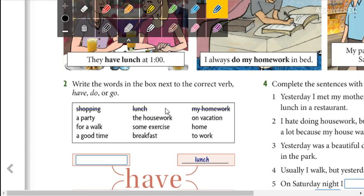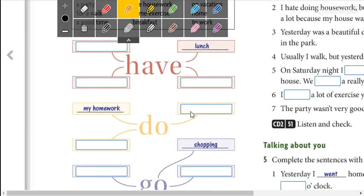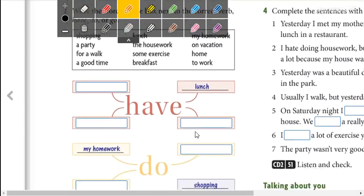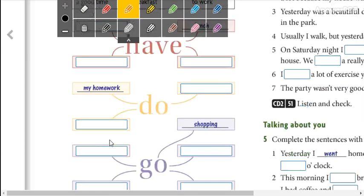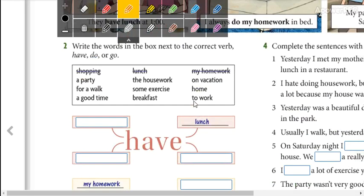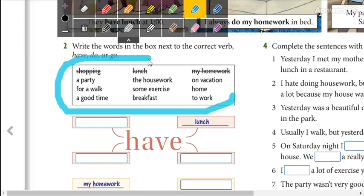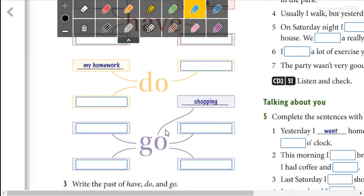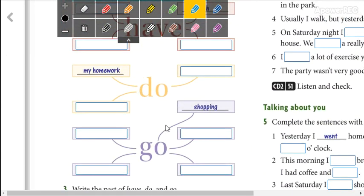Here you are going to write the words that you have here next to the correct verb: have, do, or go. For example, have lunch, do my homework, go shopping. So use these words and complete the charts for the verb have, the verb do, and the verb go. Make a pause and complete.